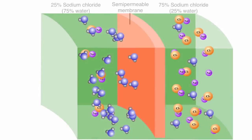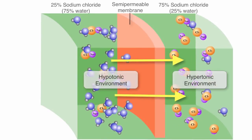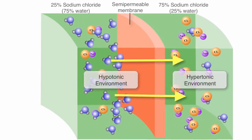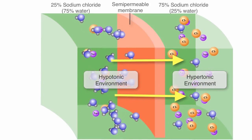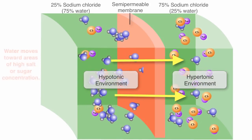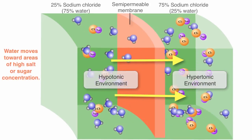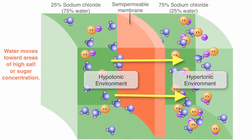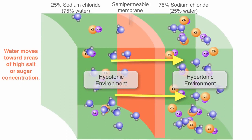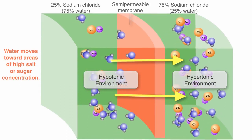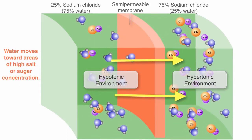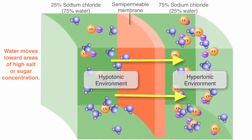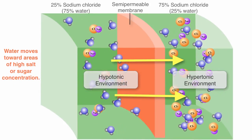An important thing to remember is that osmotic pressure always causes water to move from a hypotonic environment toward a hypertonic environment. In other words, water moves toward areas of high salt or sugar concentrations. This simple process is used to drive the operation of our kidneys and explains some of the physiological consequences of diseases such as diabetes.